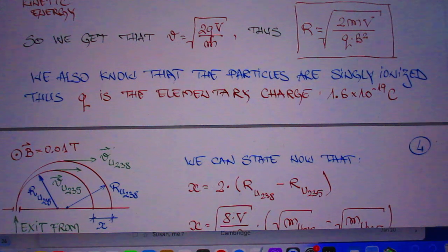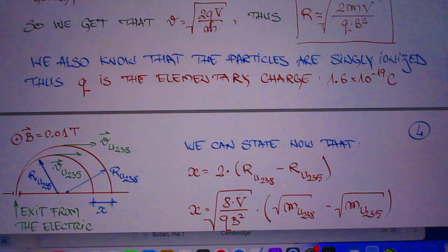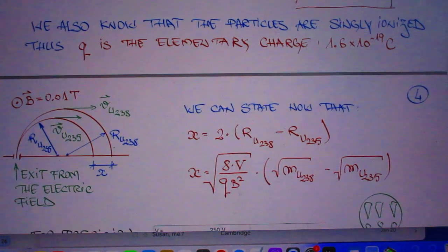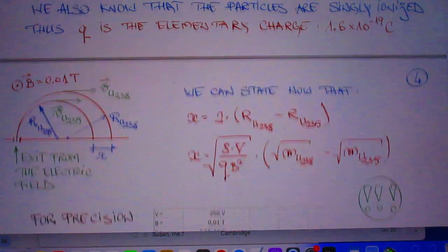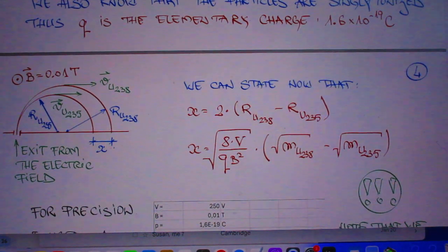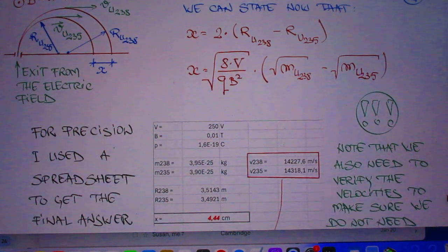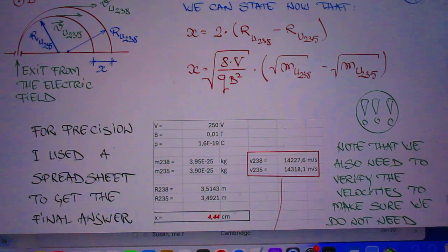Oh, he mentions that too. We also know that the particles are singly ionized, so Q is the elementary charge, and that is 1.6 times 10 to the minus 19 Coulomb.